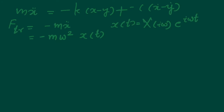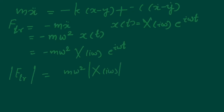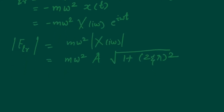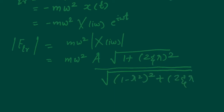The transmitted force is: F_transmitted = −mω²·X(iω)·e^(iωt). The magnitude of the transmitted force is then: |F_T| = mω²·|x(iω)| = mω²·A·√(1 + (2ζr)²) divided by √((1 − r²)² + (2ζr)²).